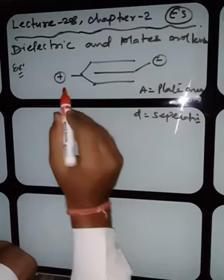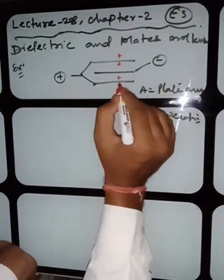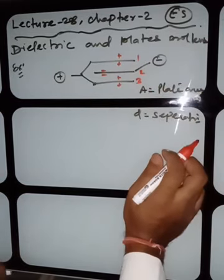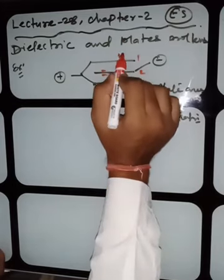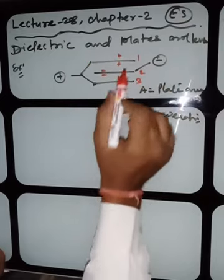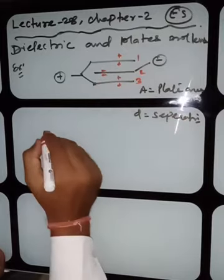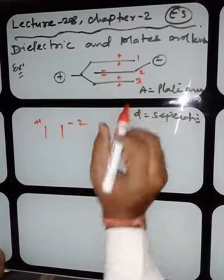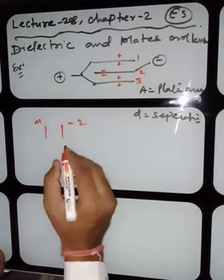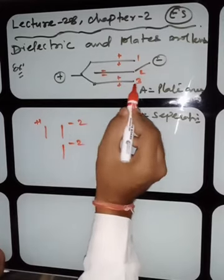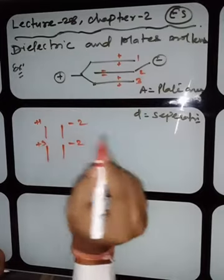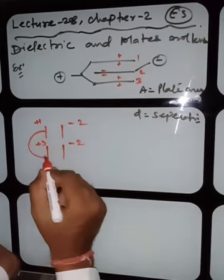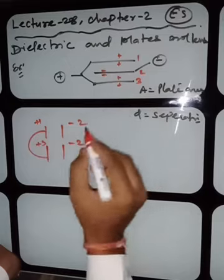First, give the polarity: if it is positive, then by induction up and down; if it is negative, then negative up and down. Then give numbering: 1, 2, 3. Start making capacitors from above. Plate 1+ makes a capacitor with plate 2−. Plate 2− has another minus, and that minus 2 makes a capacitor with plus 3. There is no plate above 1+, so we stop.